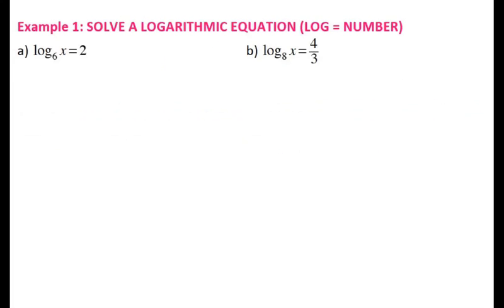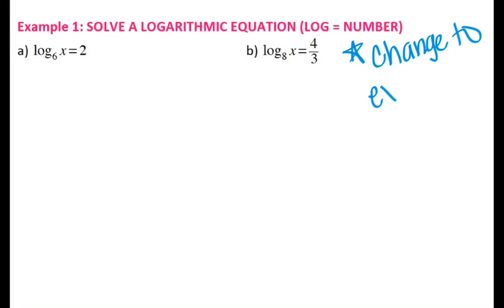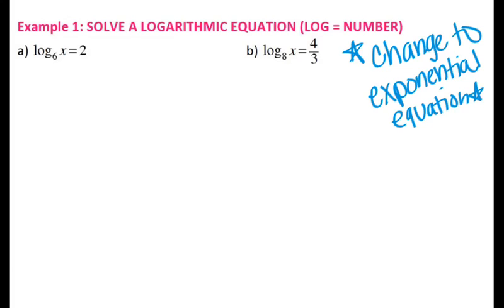For the case where a log equals a number, what you want to do is change it to an exponential equation. So we're going to change this — 6 squared equals x. And then it's easy: 6 squared is 36, so x equals 36.